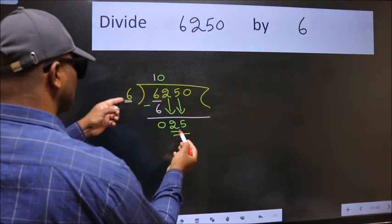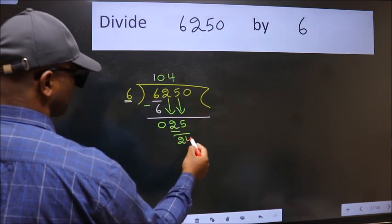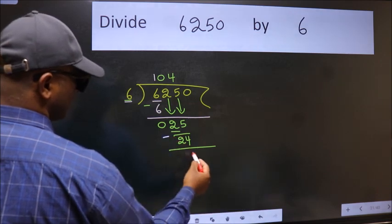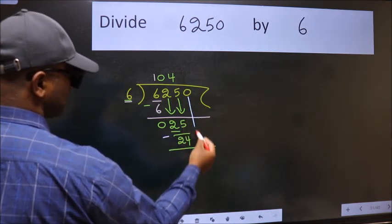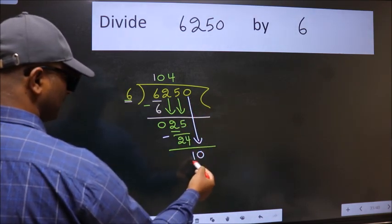A number close to 25 in the 6 table is 6 fours 24. Now, we subtract. We get 1. After this, bring down the beside number. So, 0 down. 10.